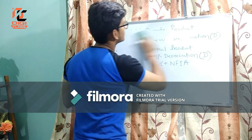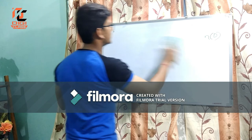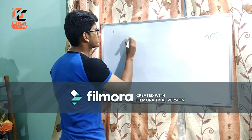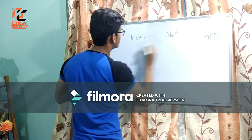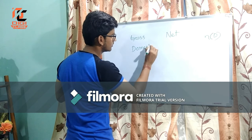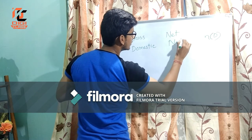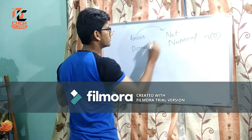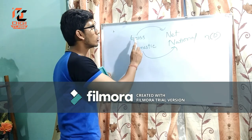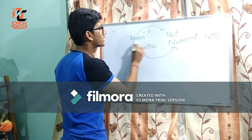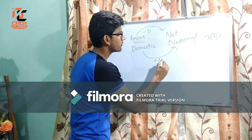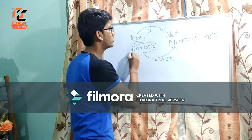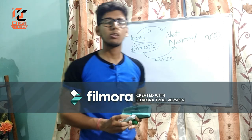Now let us understand a trick. There are two tricks actually. First, if you want to go from gross to net, we have to deduct depreciation charges from the gross value. Second, if we want to go from domestic to national, we have to add Net Factor Income from Abroad to the domestic value, and then we can easily get the national value.